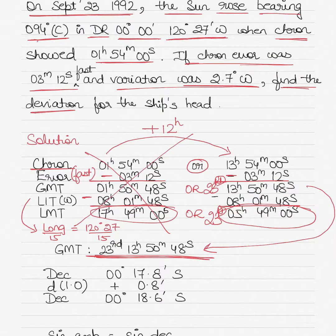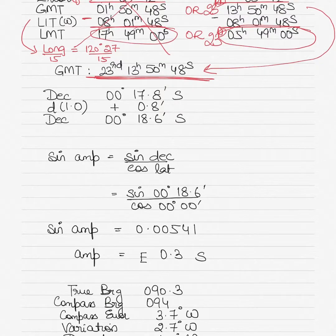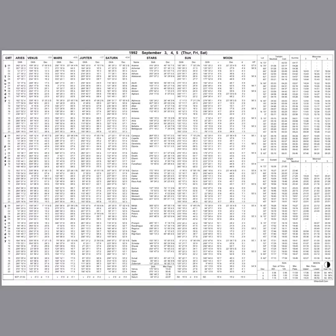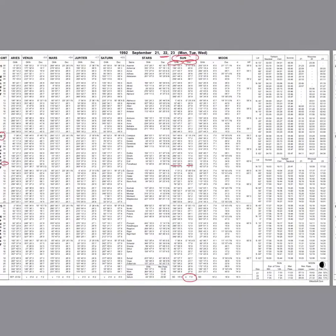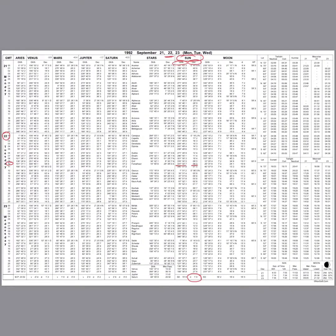Important note: do not use LMT for further calculations — it was only used to identify the correct GMT. Use the correct GMT of 23rd September 13 hours 50 minutes 48 seconds for the rest of the question. We need this time to find the declination, so we enter the Nautical Almanac for 23rd September at 1300 hours.